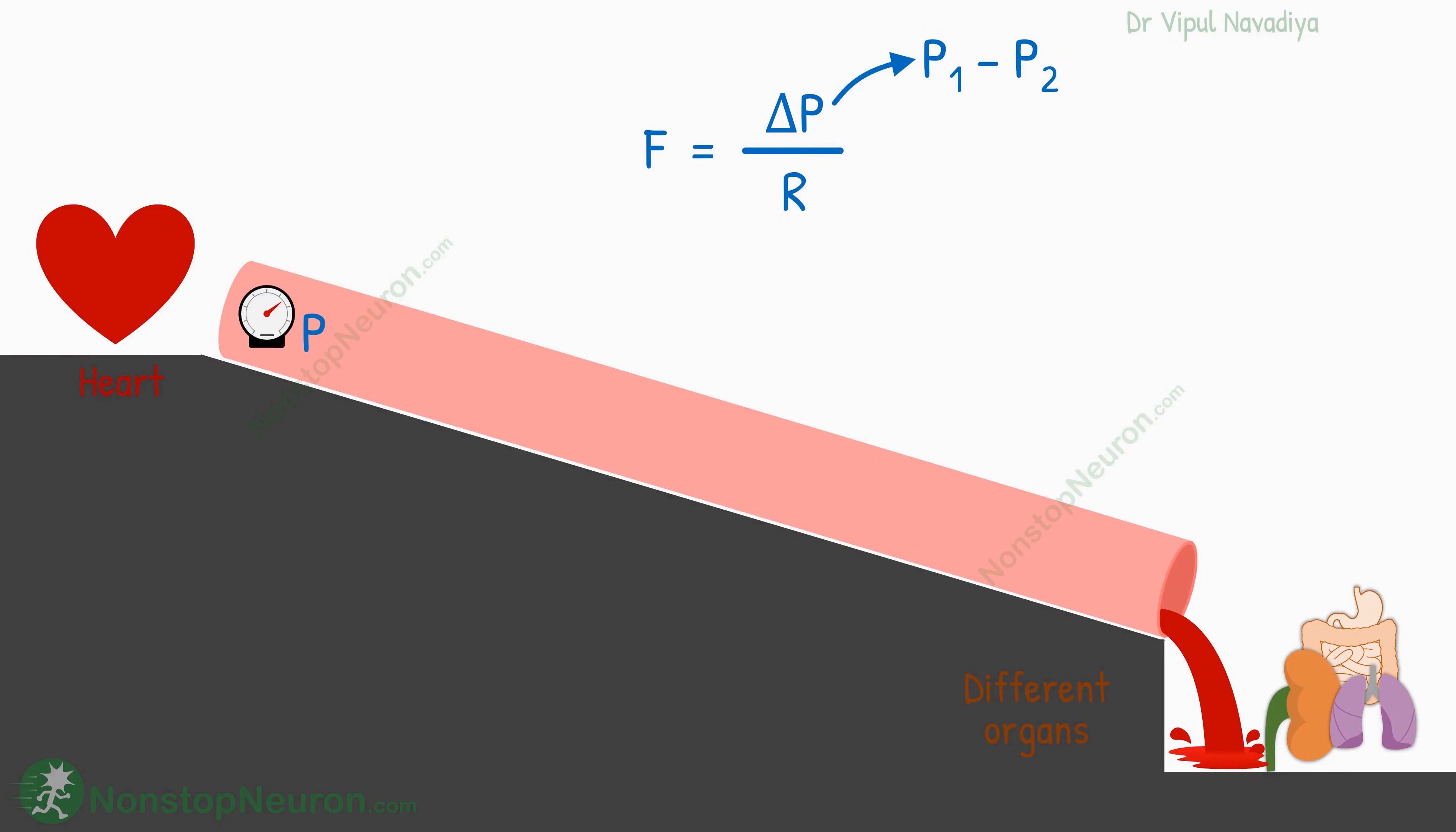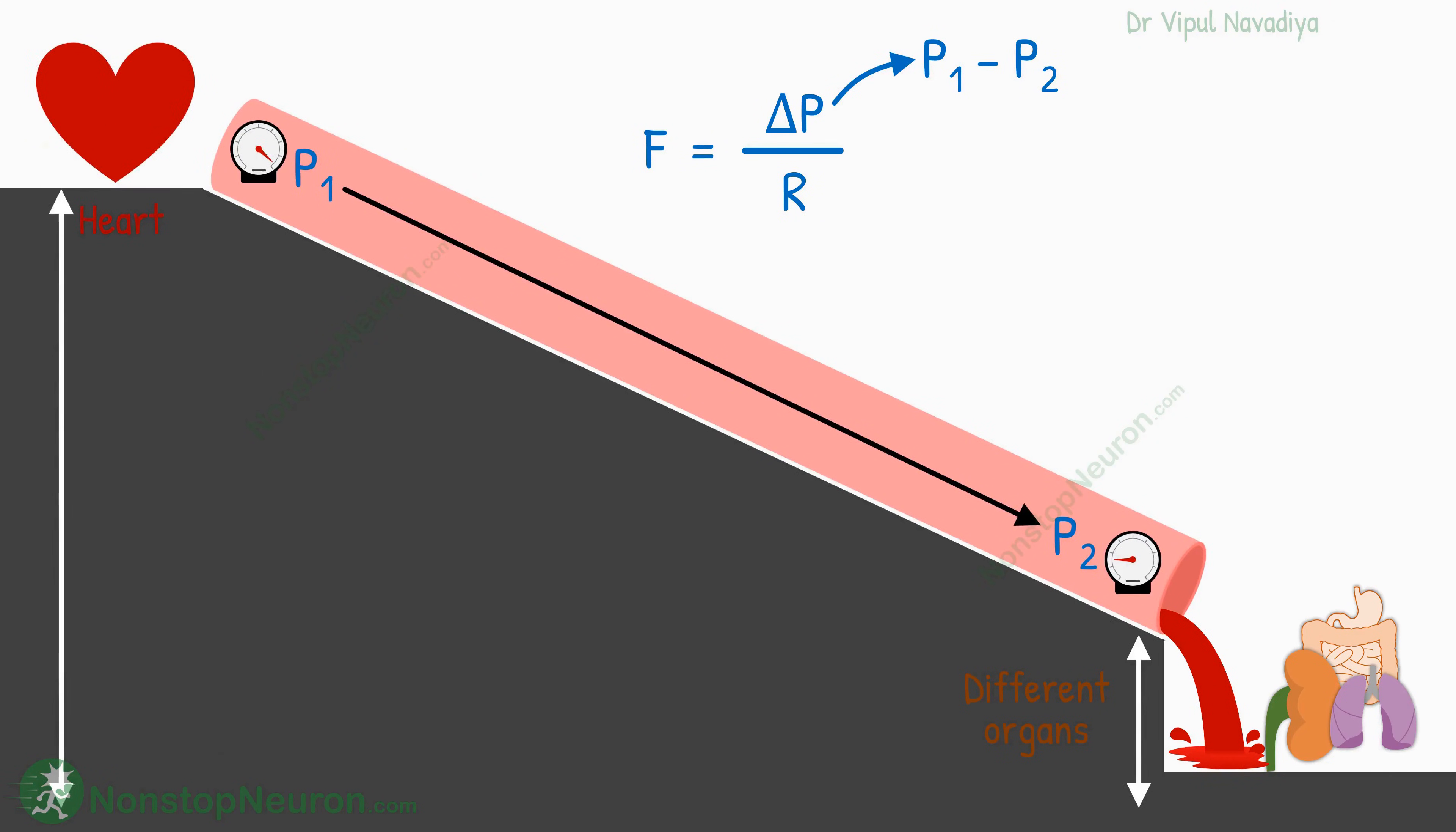The pressure gradient means the difference in pressure between two points. It's like a slope. The height represents the pressure here. The more the difference in pressure, or in simple words, the steeper the slope, the faster the blood flows. So by being the numerator, the pressure gradient is telling you that he increases blood flow.